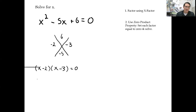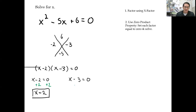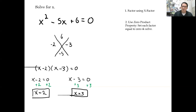From here I separate this out: X minus two equals zero or X minus three equals zero. Solve each individually. Add two: X equals two. Add three to the other side: X equals three. So my two solutions are X equals two or X equals three. There's a little bit of a shortcut — if you start noticing a pattern, you're welcome to use it, but I'm not going to tell you what it is.